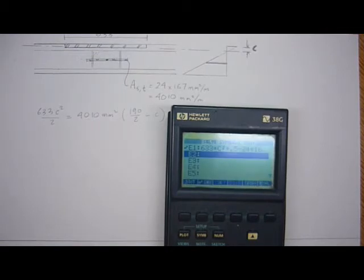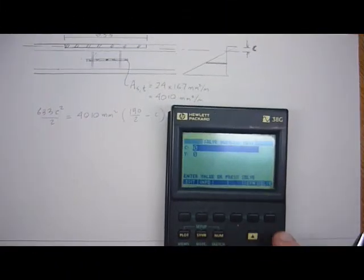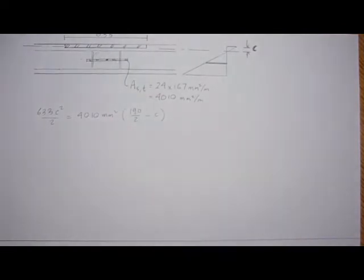And then we can calculate what the C is, the neutral axis location. So we have the equation in, and we just solve now for C. The C is going to be 28.9 millimeters.